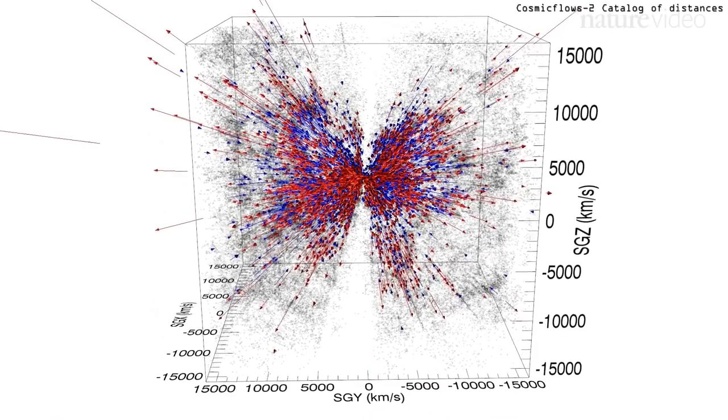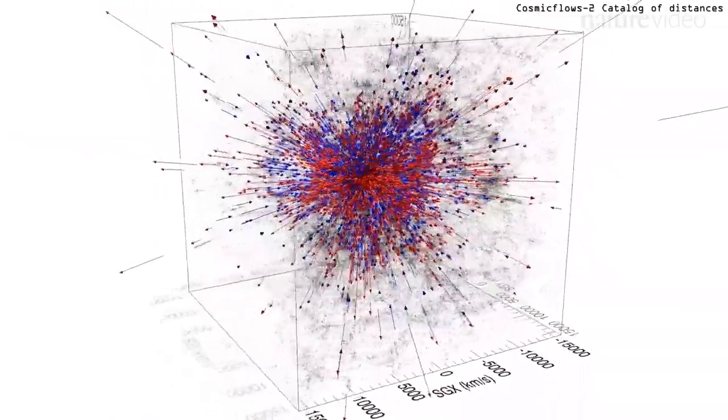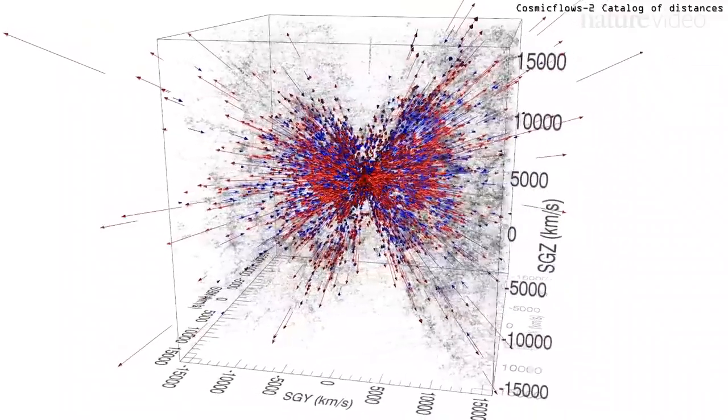By discounting cosmic expansion, the team worked out which galaxies are being pulled towards us, shown in blue, and which are being pulled away, shown in red.